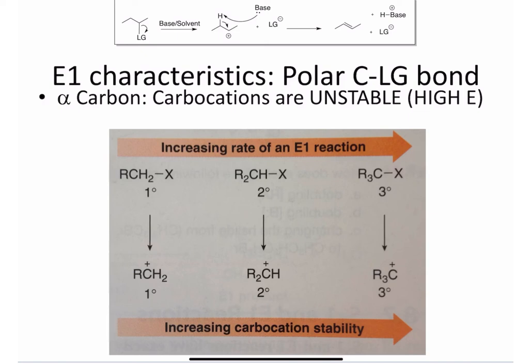The first thing to take a look at is the polar carbon leaving group bond. We're making carbocations in the first step of this reaction and carbocations are unstable, or otherwise said, they're very high in energy.